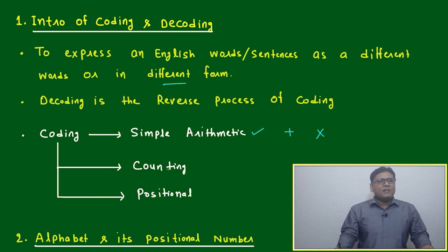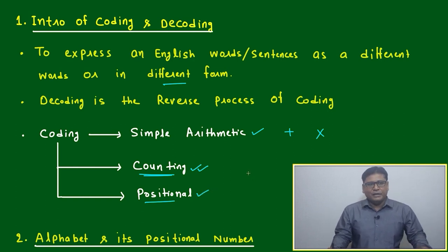Next is based on counting also - coding will be made. And next, based on positional changes, like any alphabet positioned at odd places or even places, based on that also logic will be created.